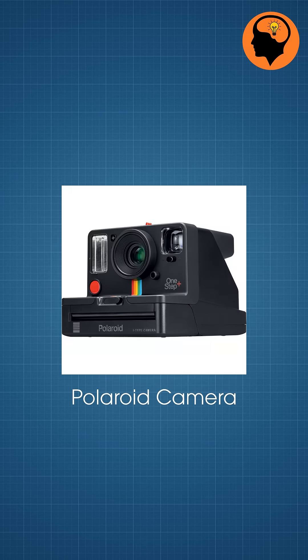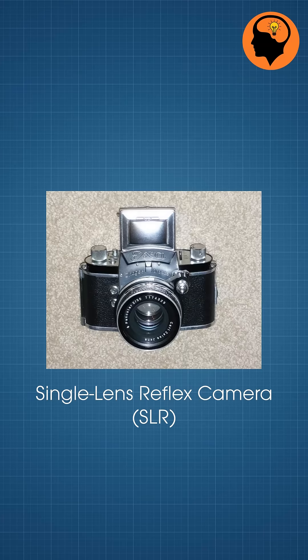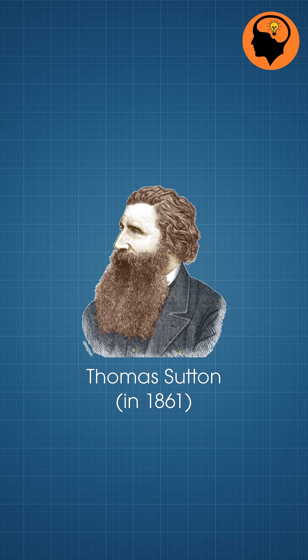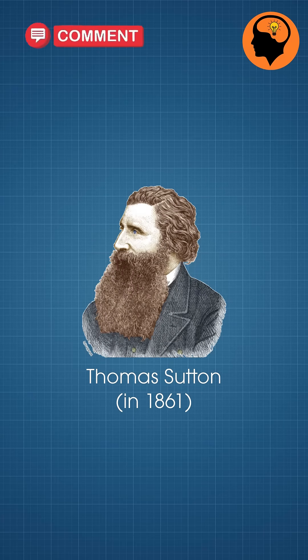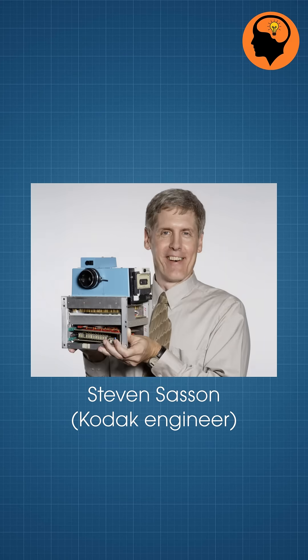The Polaroid camera was invented by Edwin H. Land in 1948. The first practical single-lens reflex camera was invented by Thomas Sutton in 1861. The first digital camera was built by Kodak engineer Stephen Sasson.